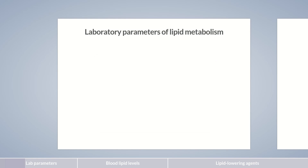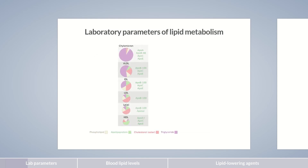Let's start with laboratory parameters. Here, we're interested in the values relevant to the risk of atherosclerosis. To better understand these, let's look at lipoproteins again. HDL cholesterol is associated with a lower risk of atherosclerosis. Triglycerides are mainly found in chylomicrons, VLDL, and IDL particles. Their proportion in LDL and HDL is low. Both laboratory values — HDL cholesterol and triglycerides — can be determined spectroscopically.